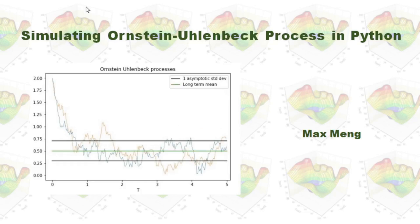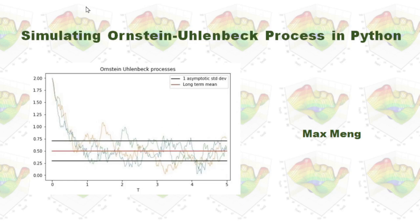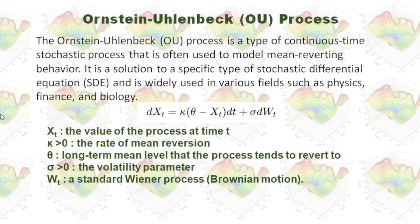I'm going to talk about simulating the Ornstein-Uhlenbeck process in Python. The Ornstein-Uhlenbeck (OU) process is a type of continuous-time stochastic process that is often used to model mean-reverting behavior. It is a solution to a specific type of stochastic differential equation and is widely used in various fields such as physics, finance, and biology.